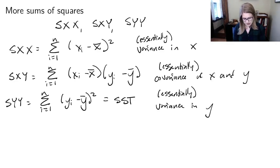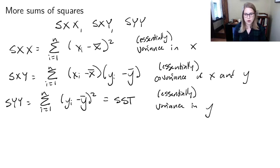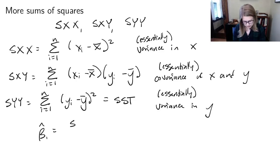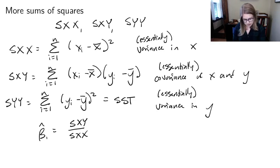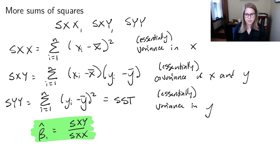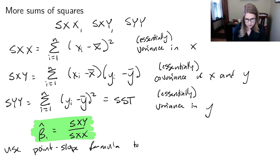The reason why it's nice to have these terms is because we can use them to compute the regression coefficients. This is something I might ask you to do on an exam — I might give you some information about sums of squares and ask you to tell me what the equation of the line is. One thing you'd need to know is that beta_1_hat is equal to S_XY divided by S_XX.